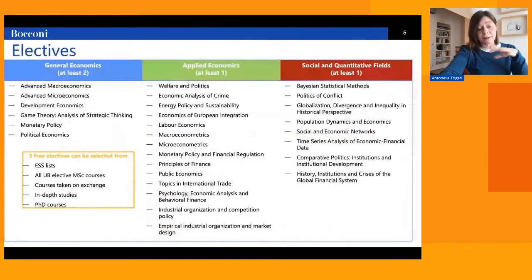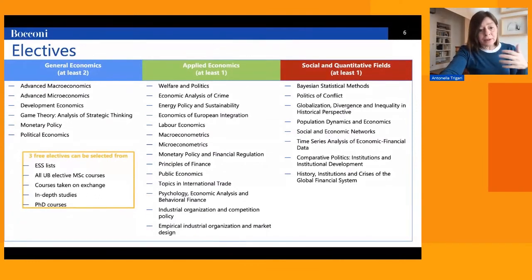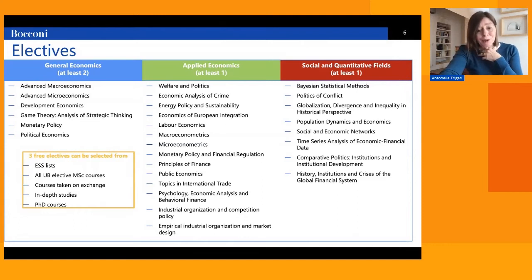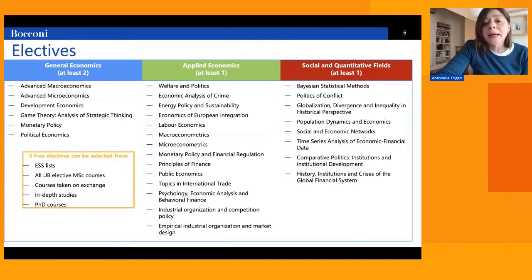The three lists are organized by area. Students must choose at least two courses from the first list on general economics — courses such as Advanced Macro or Advanced Micro. They must pick at least one from the second green list on applied economics, which includes Public Economics, Labor Economics, Industrial Economics, Macroeconometrics and Microeconometrics, but also Psychology and Economic Analysis, Behavioral Finance, or Economic Analysis of Crime. Finally, at least one course must come from the third list covering social and quantitative fields — examples include Bayesian Statistical Methods and Politics of Conflict.